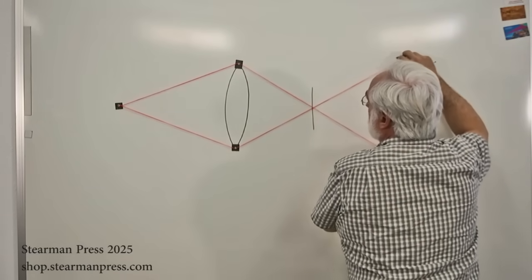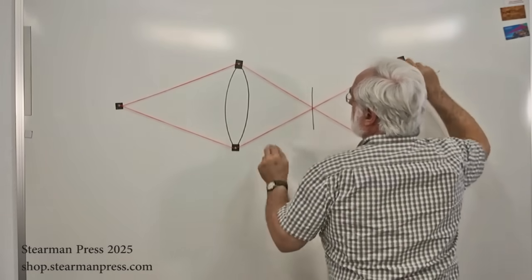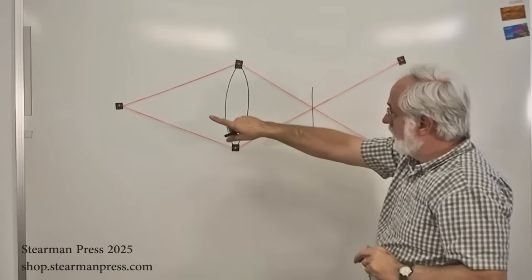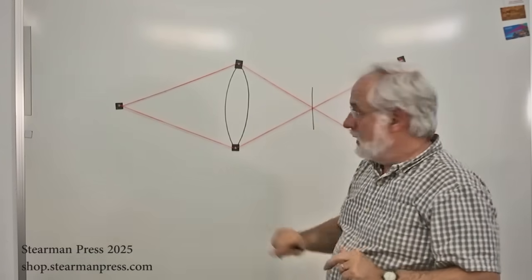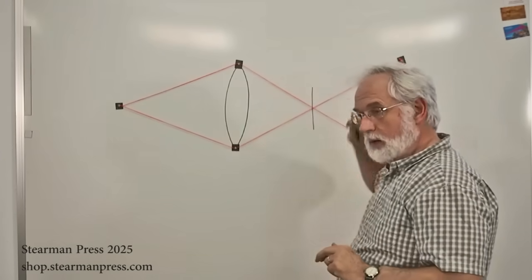Anyway, the strings represent the light rays coming through the lens and focusing on the film plane. And you get a nice, sharp point right there.